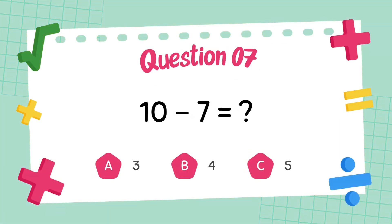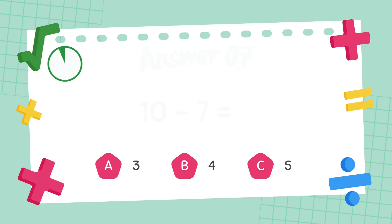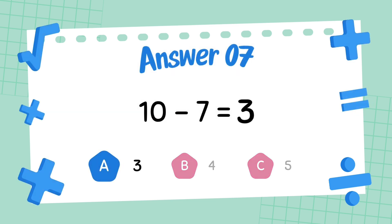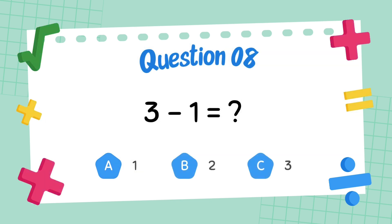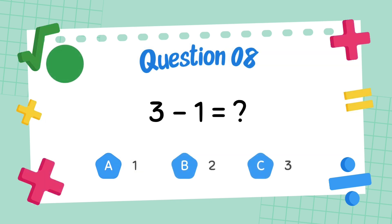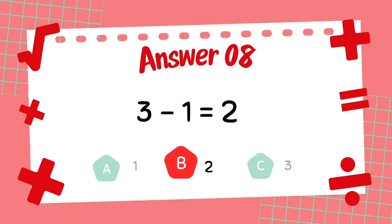What is 10 minus 7? The answer is 7. What is 3 minus 4? The answer is 2.